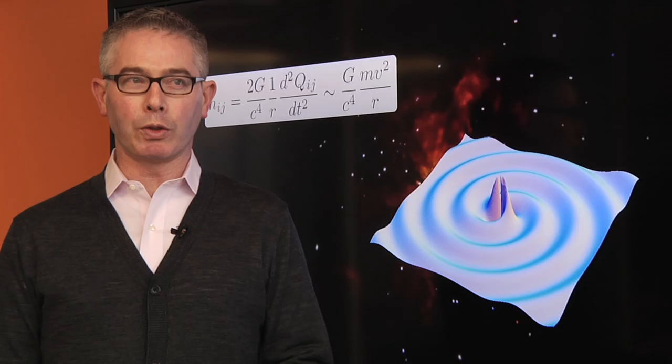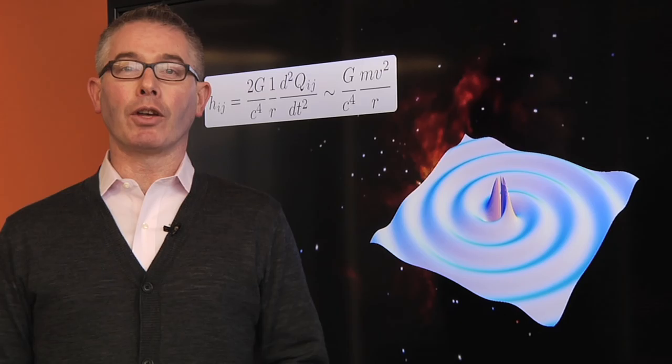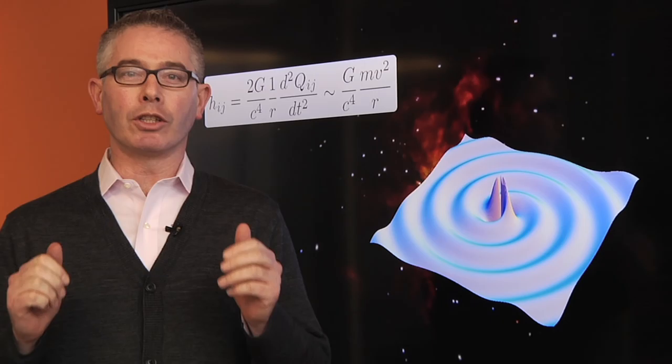LIGO is a gravitational wave detector that senses those ripples as they pass by, like a giant ear listening to the shaking of space-time.